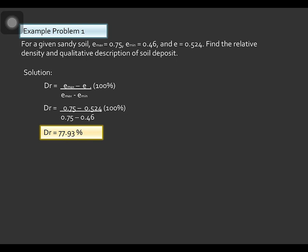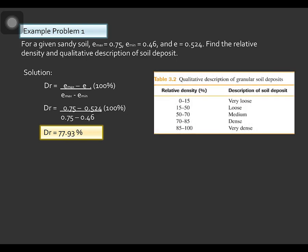Next, the qualitative description of the soil deposit. From our table, since the value of the relative density is equal to 77.93, the relative density is between 70 to 85, therefore it is a dense soil.